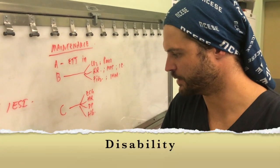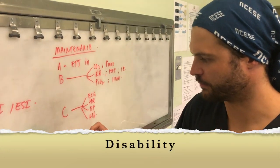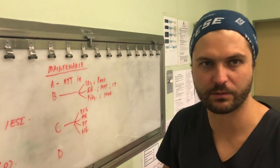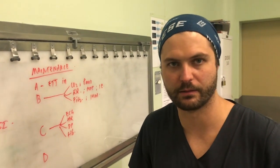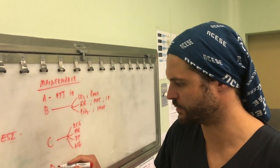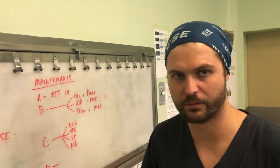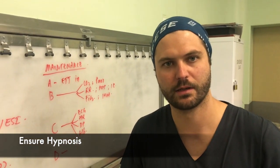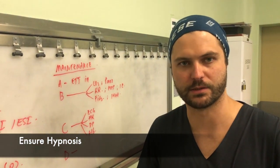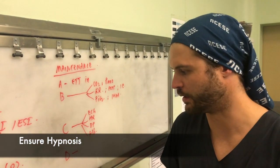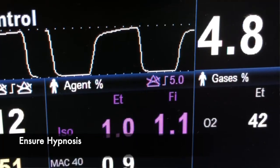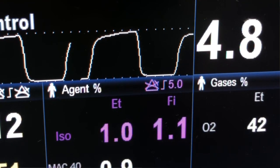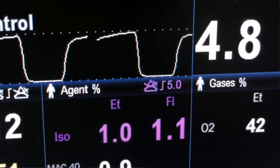D is for disability, which fits into the triad of anesthesia. This reminds us that we have given a muscle relaxant and we don't want the patient to be aware, so we want to make sure the patient has sufficient hypnosis on board.